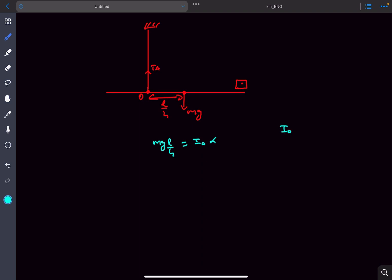Now what is I about O? It is actually I about the center of mass plus M times L by 4 squared, and I about center of mass is ML squared by 12. On solving you'll get the moment of inertia as 7 ML squared by 48.